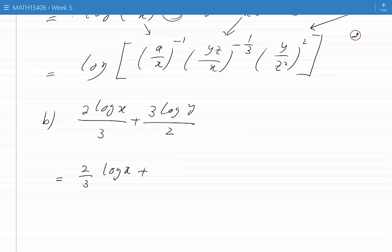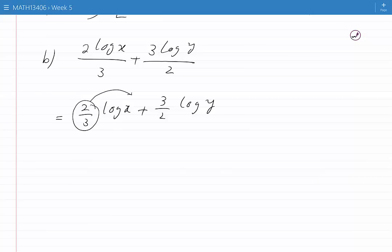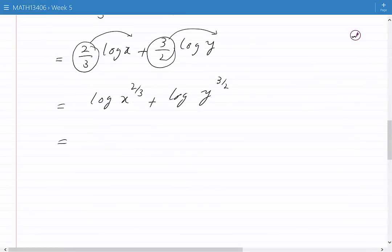Once again, we can move 2/3 up as the power of X to get log of X to the power of 2/3. Then we can move 3/2 up as the power of Y to get log of Y to the power of 3/2. The sum of the logs, considering that the bases are the same, would be the log of the product.